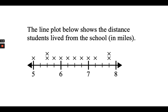The last question is: what is the most common distance from school? This actually has two answers, because there are two X's above five and a half and two X's above seven and three-fourths. So those two distances are tied as the most common distance from school.